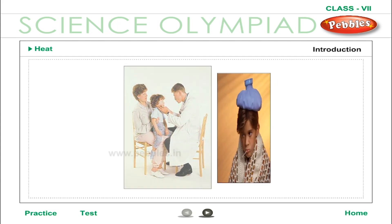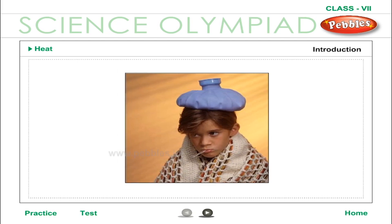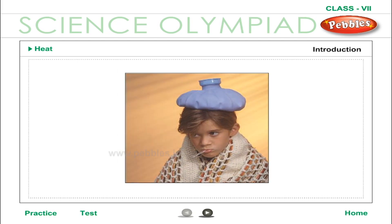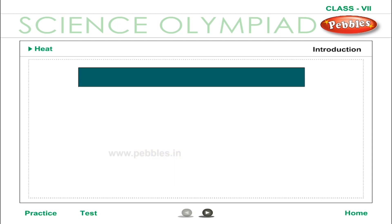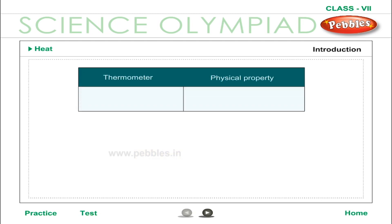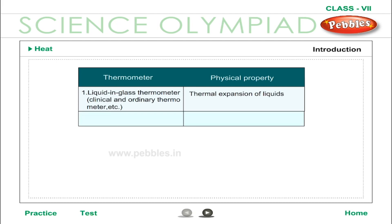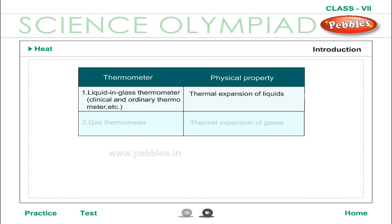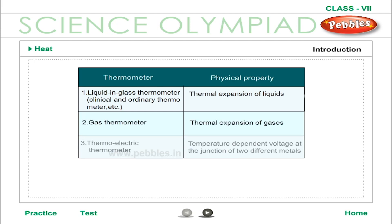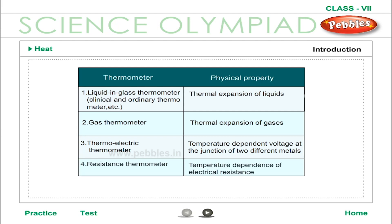Temperature is defined as the degree of hotness or coldness of a body on a chosen scale. It is measured using a thermometer. The working of a thermometer is based on any physical property that varies uniformly with temperature. The table shows various thermometers and the physical property on which each one is based.